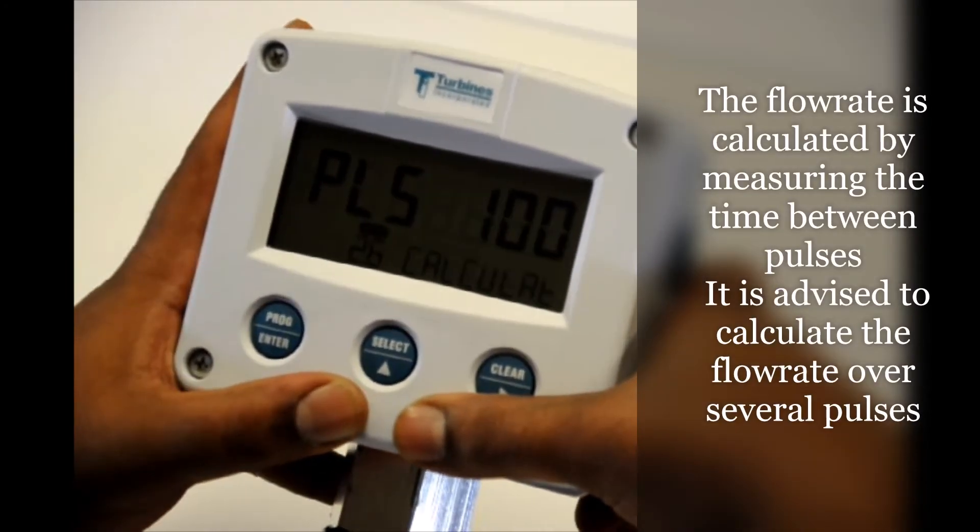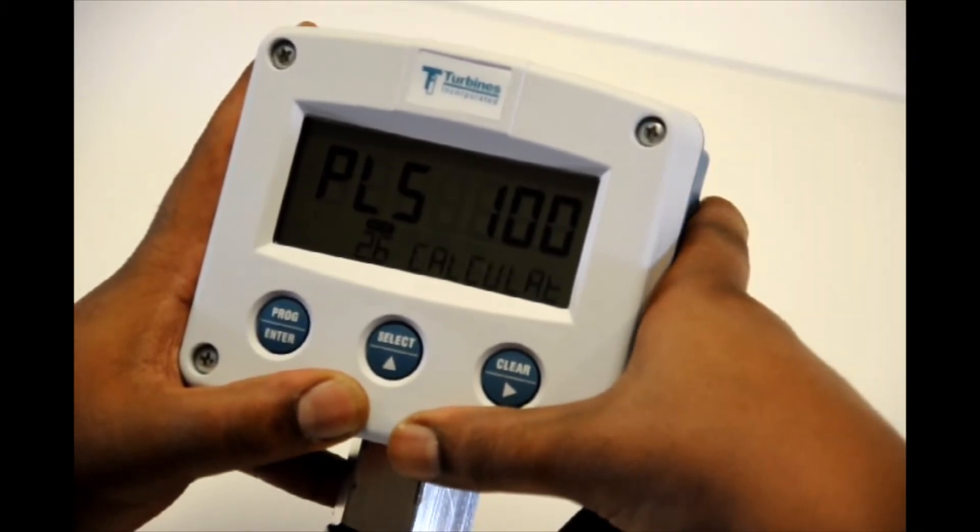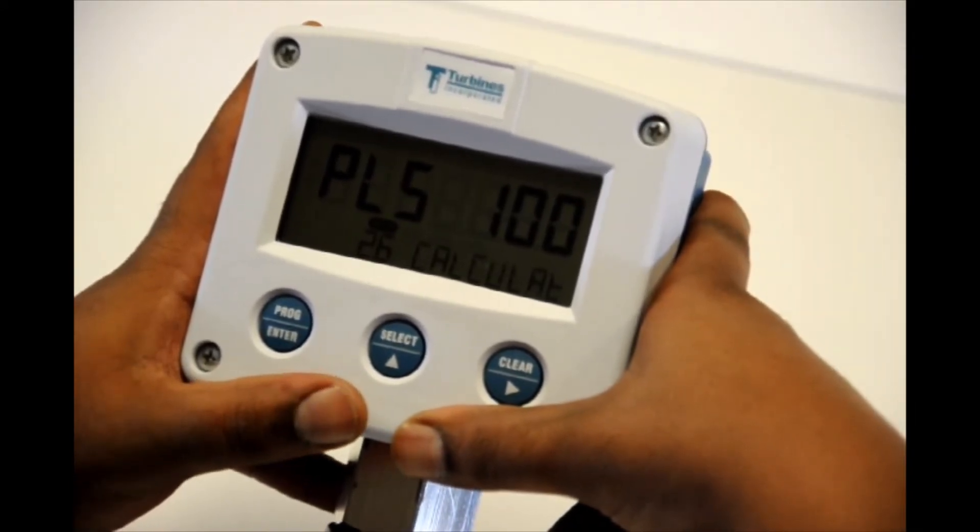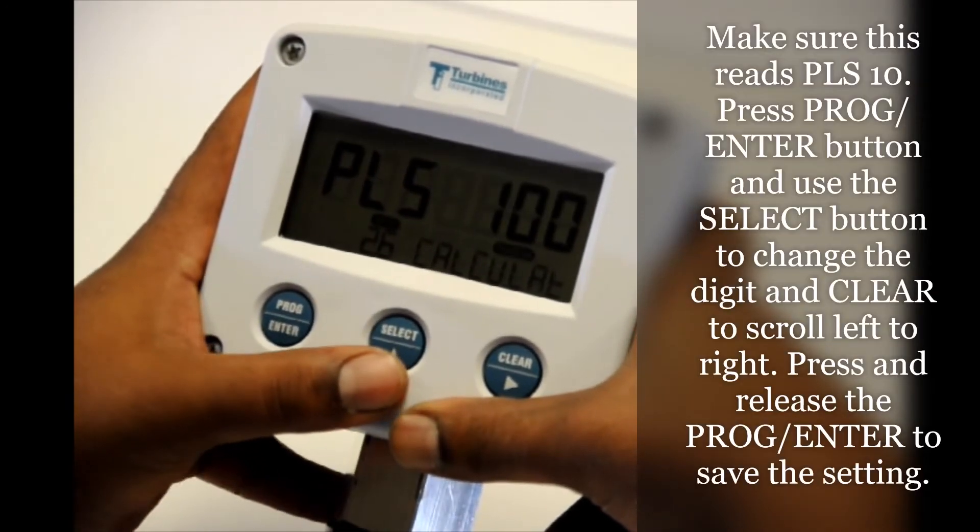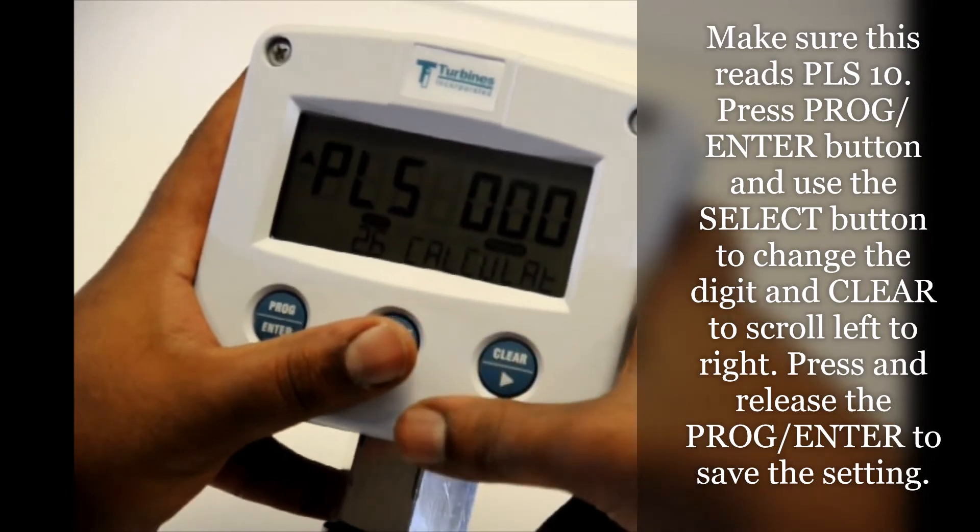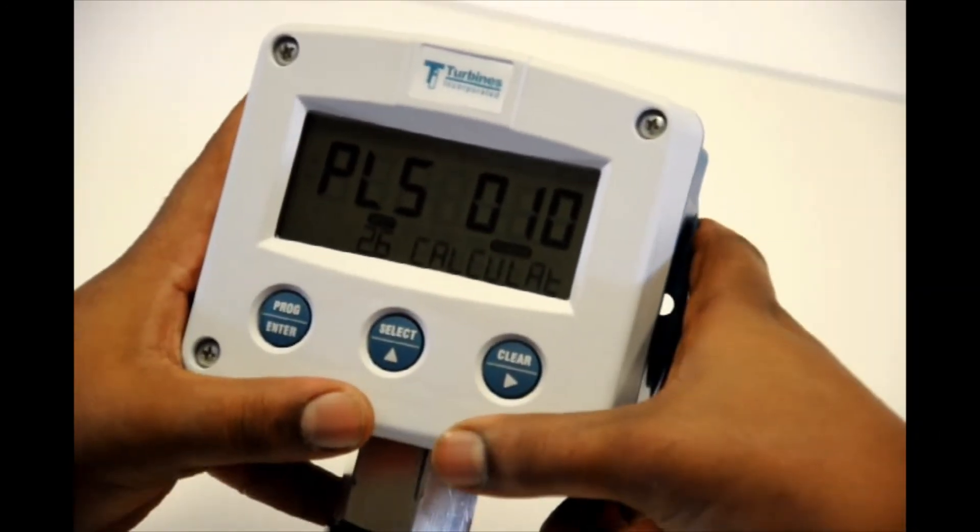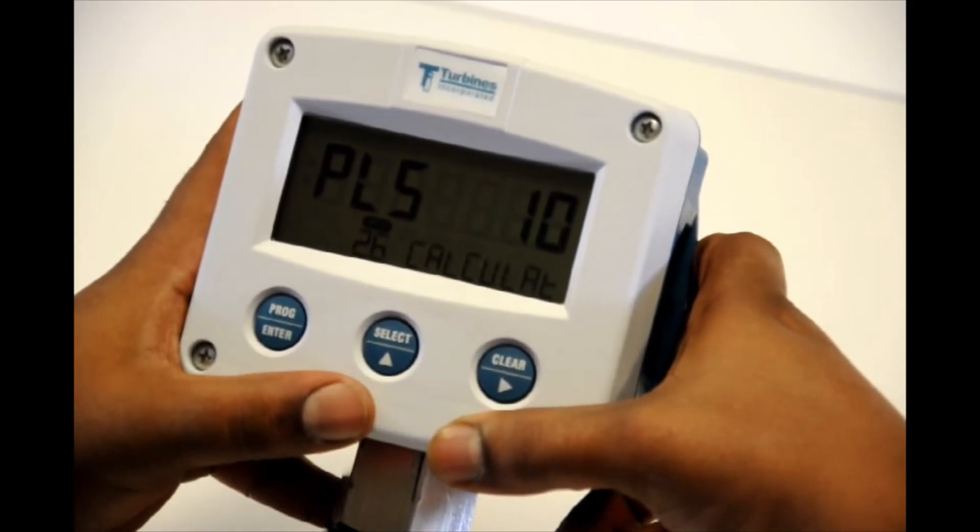Pulses are set to a hundred. We want to set our pulses to ten. This will give us a more instantaneous refresh rate for our flow rate. And to do that hit program enter. You're going to make that first number a zero with select. The next number will be one. Should have zero one zero. Hit program enter. It will make it ten. Now hit select.